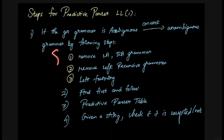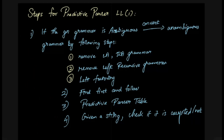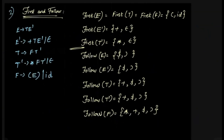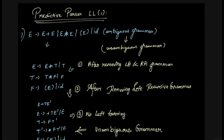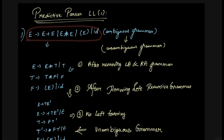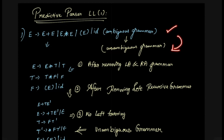Alright, so today we come into this chapter. When we keep this chapter, there are three steps. The first step involves unambiguous grammar. We have a grammar like E tends to E plus E, or E cross E — this is ambiguous grammar, so we use unambiguous grammar. I will tell the details in the previous video. In this video, the unambiguous grammar has three steps.